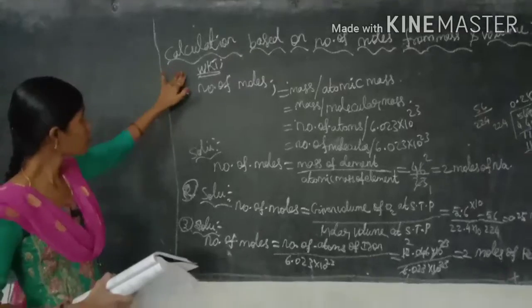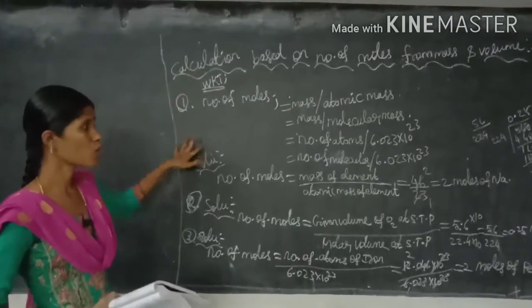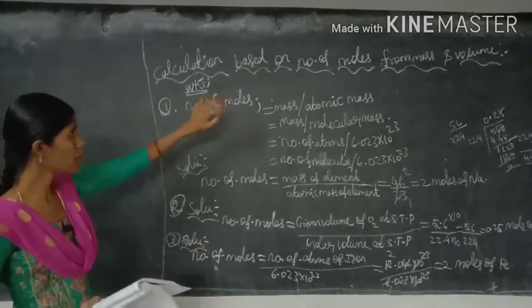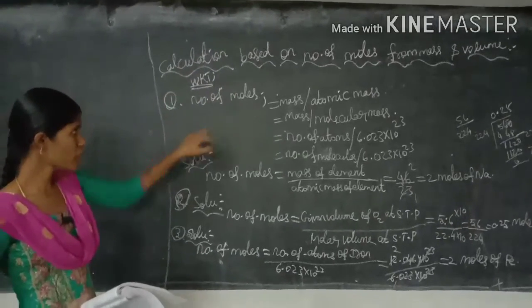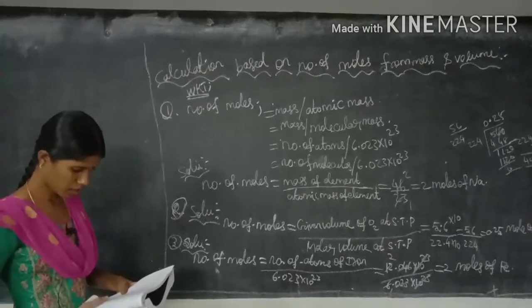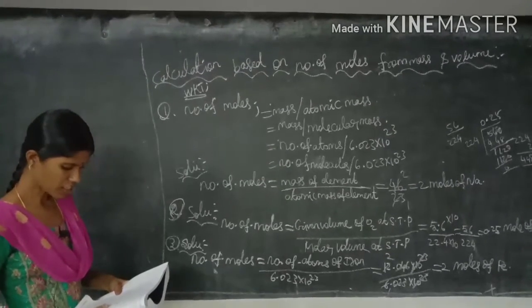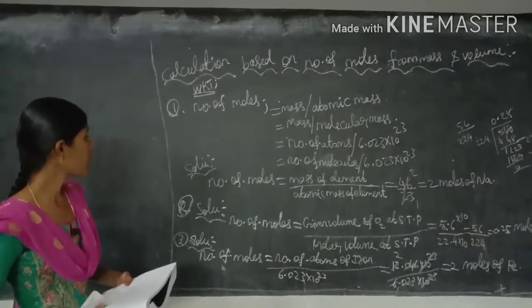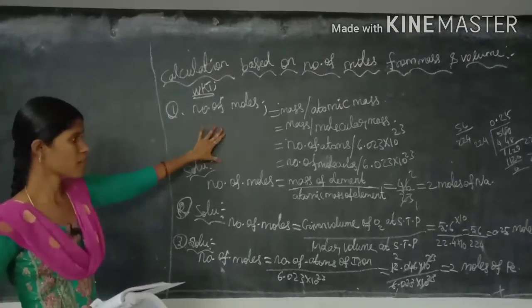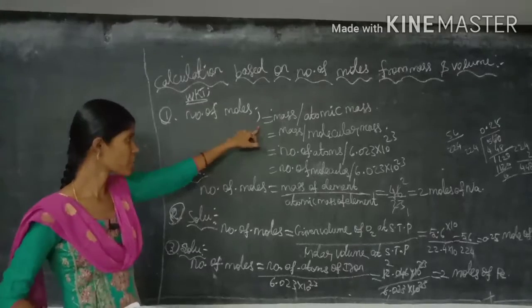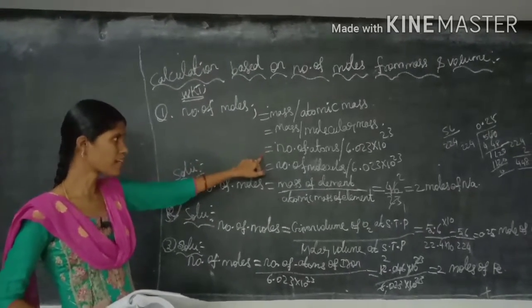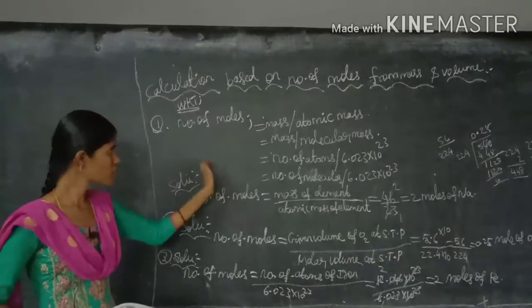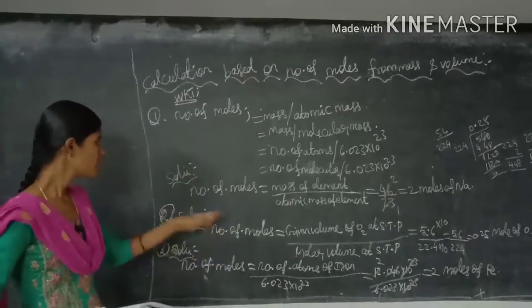Next we calculate the number of moles from mass and volume. The four formulas for number of moles are: (1) mass divided by atomic mass, (2) mass divided by molecular mass, (3) number of atoms divided by Avogadro's number, and (4) number of molecules divided by Avogadro's number. We will use these formulas for the following problems.